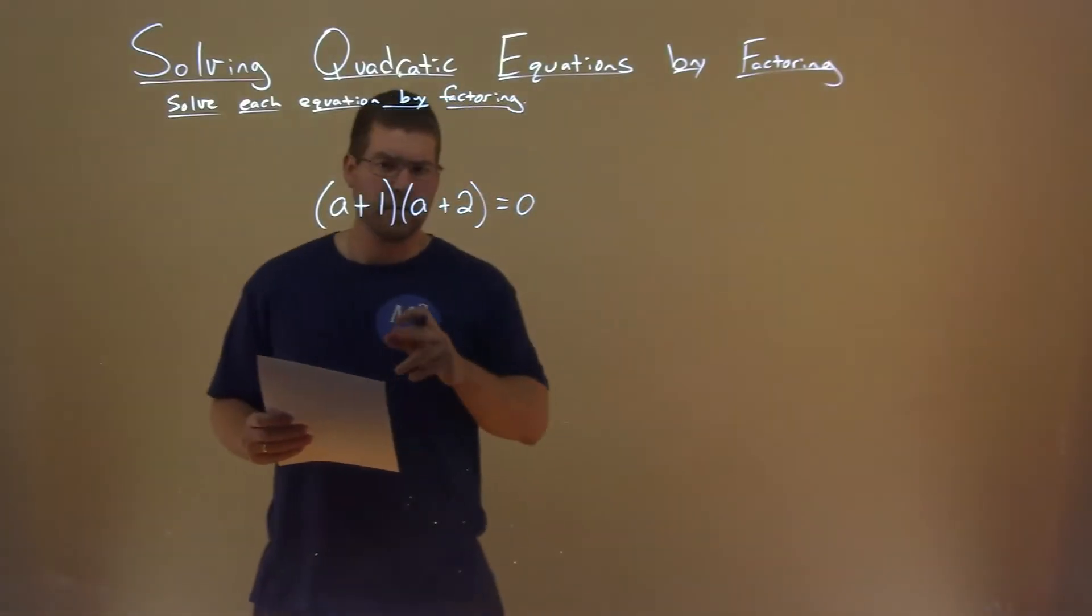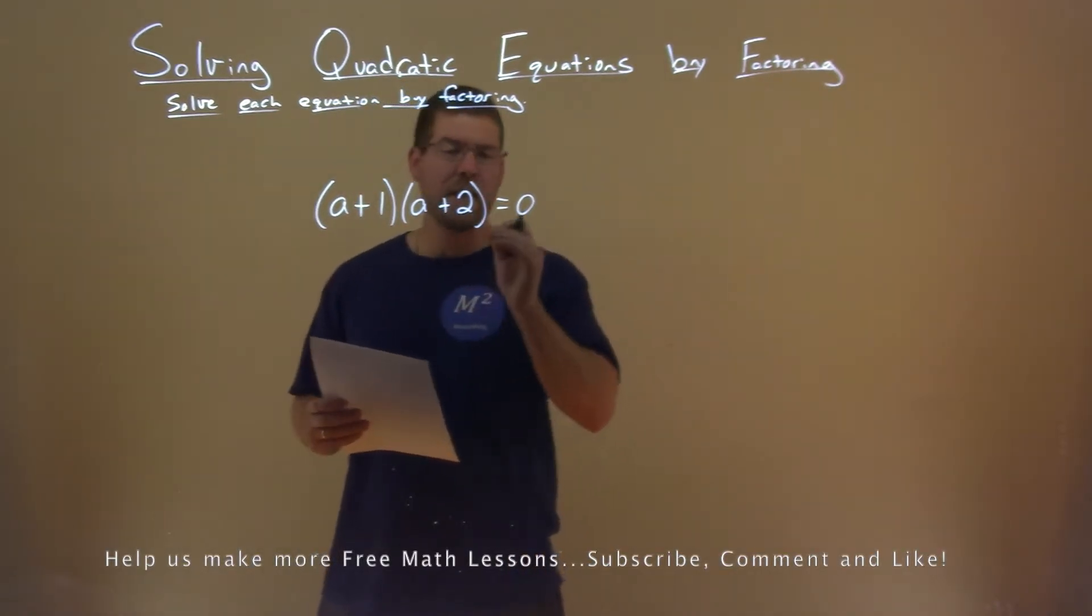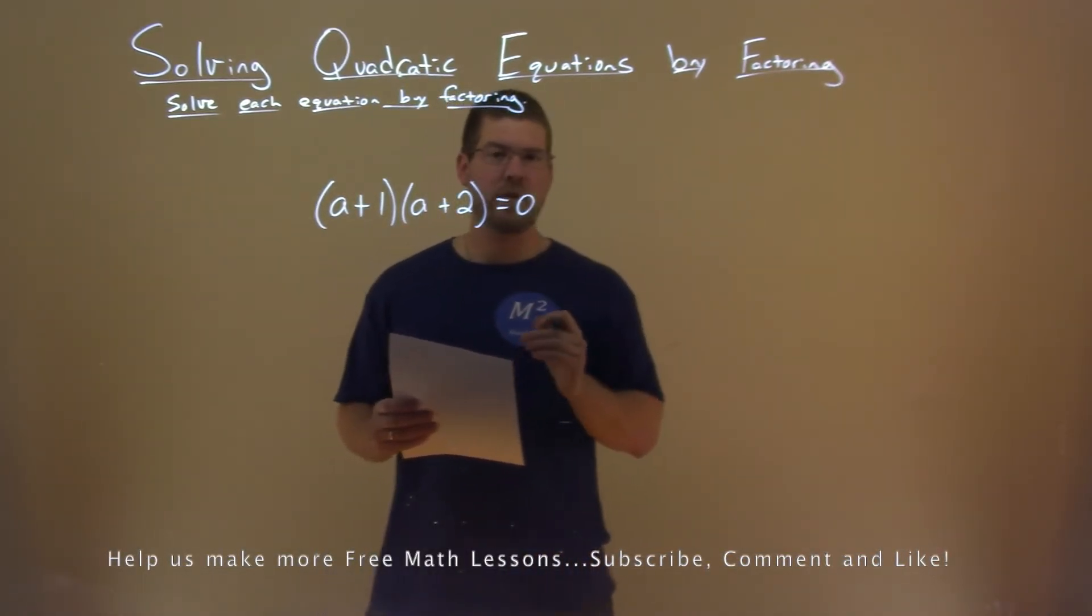We're given this problem here a plus one times a plus two and that's equal to zero and we need to solve this by factoring.